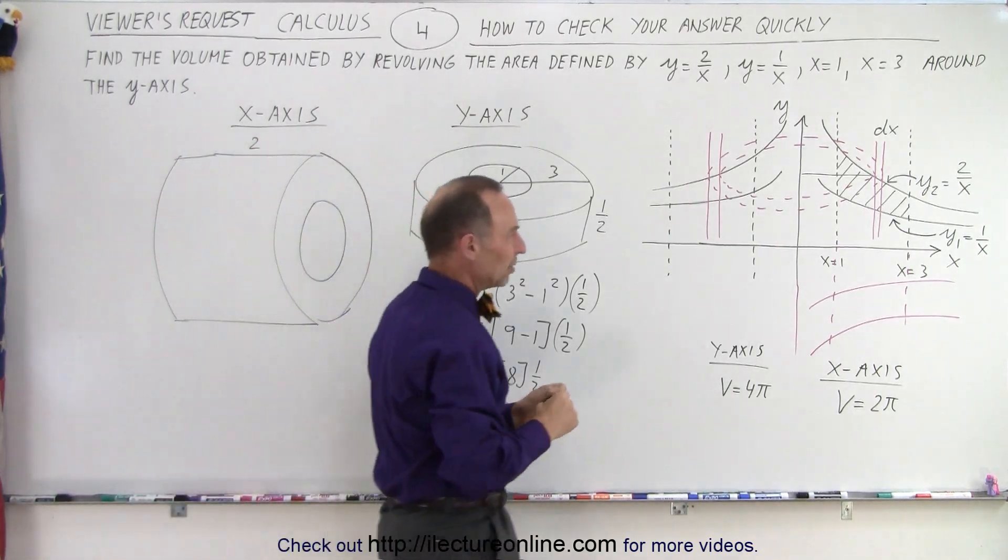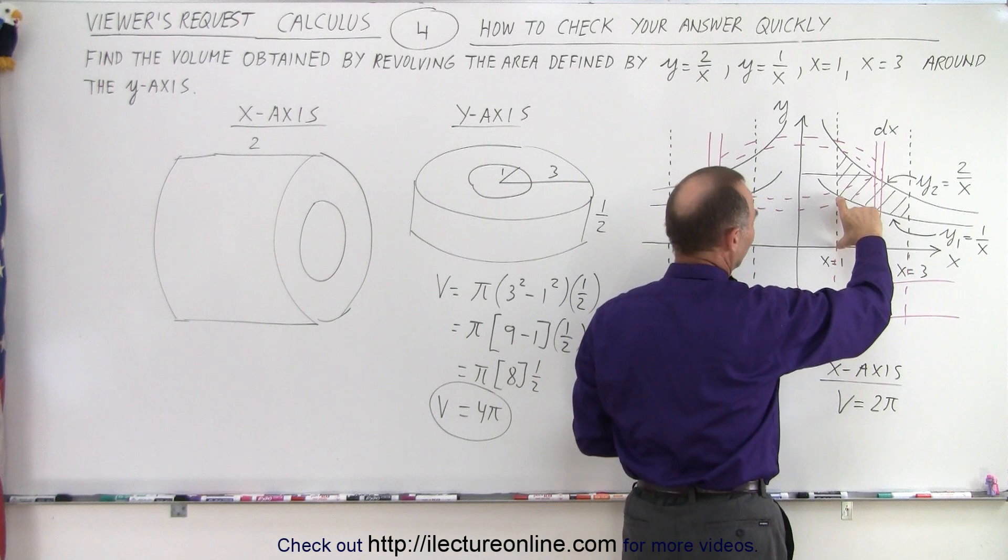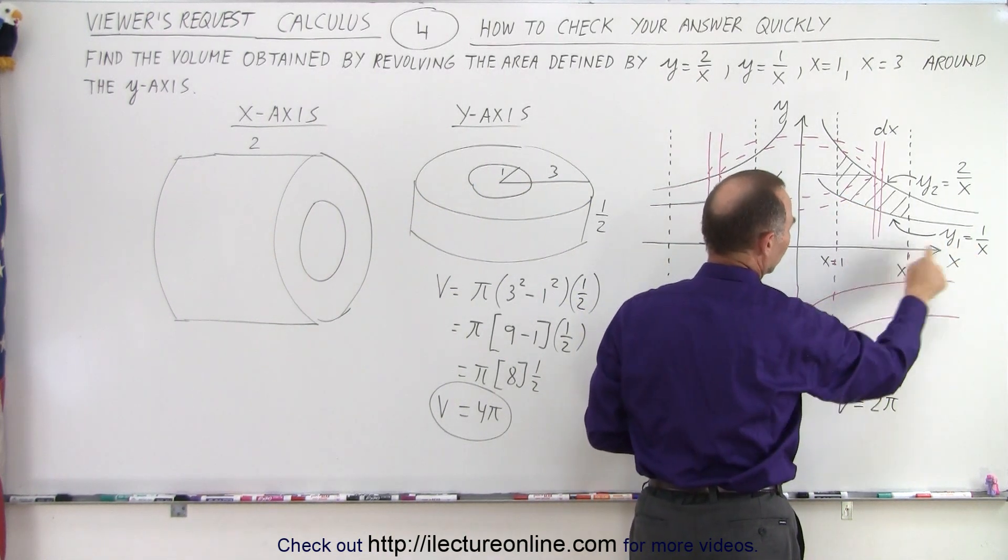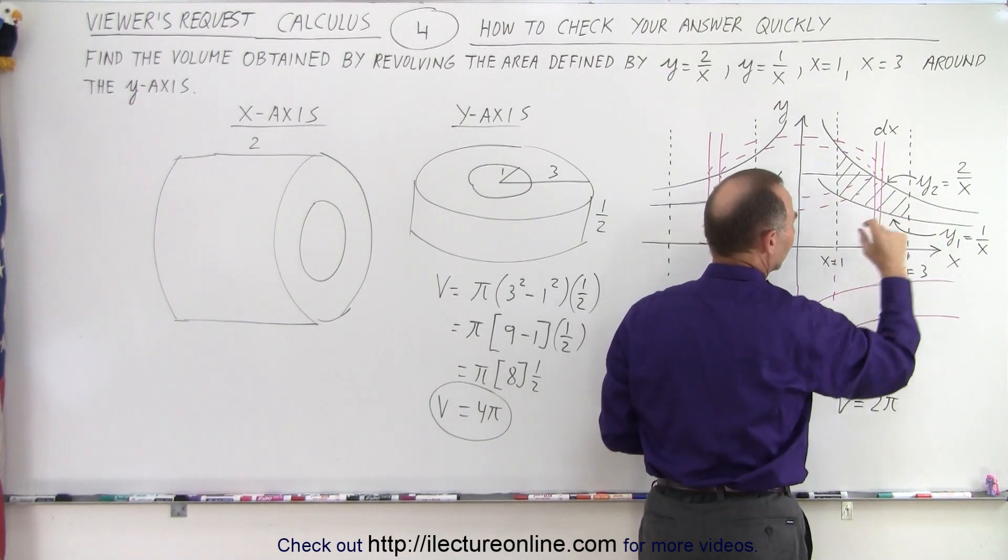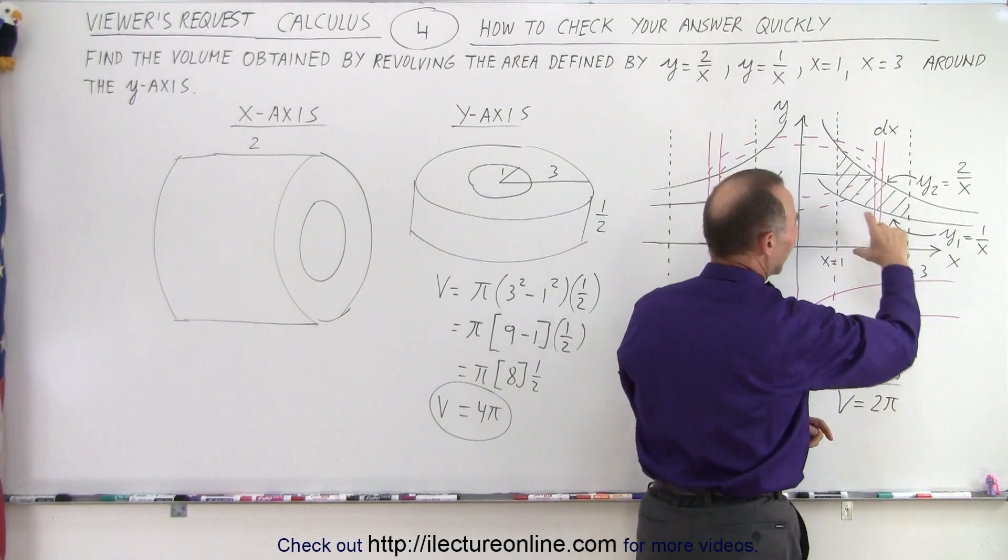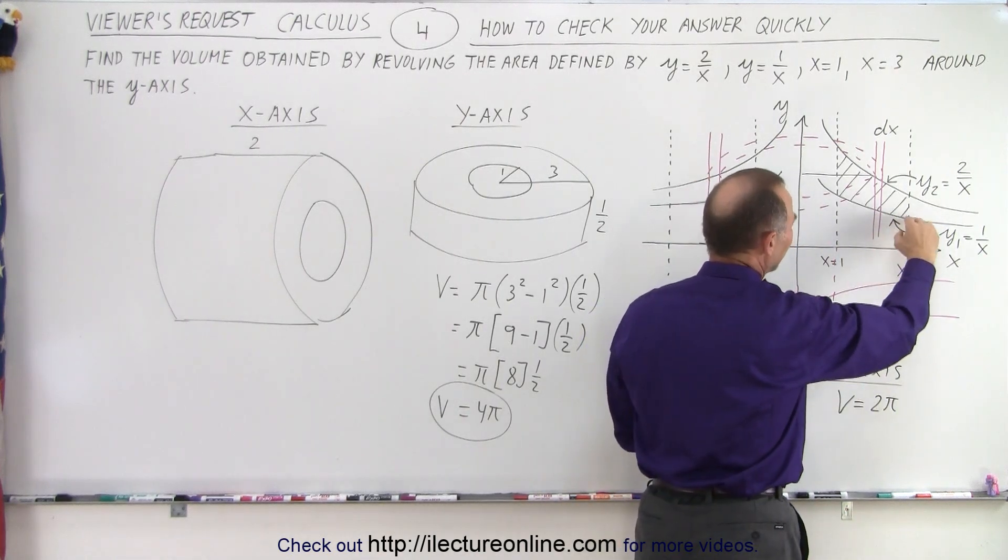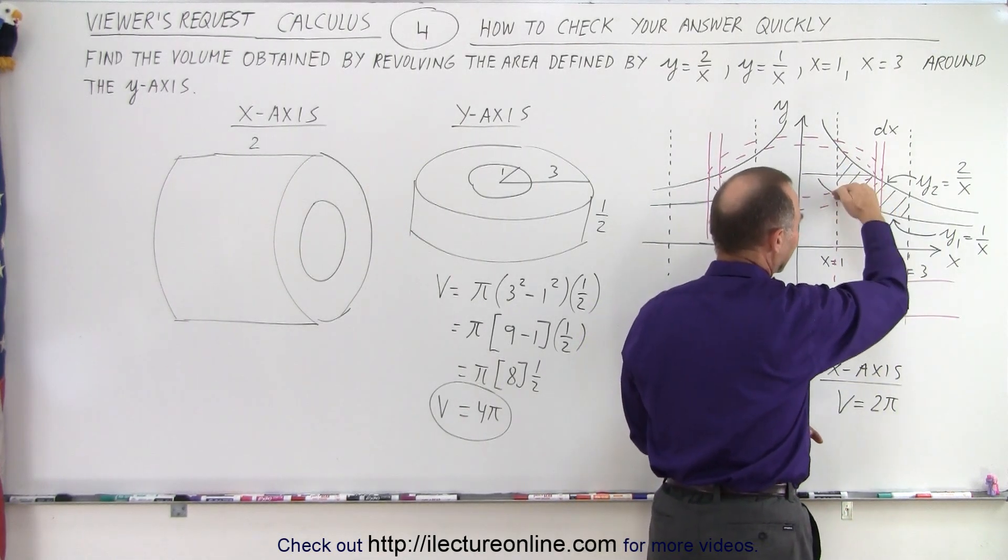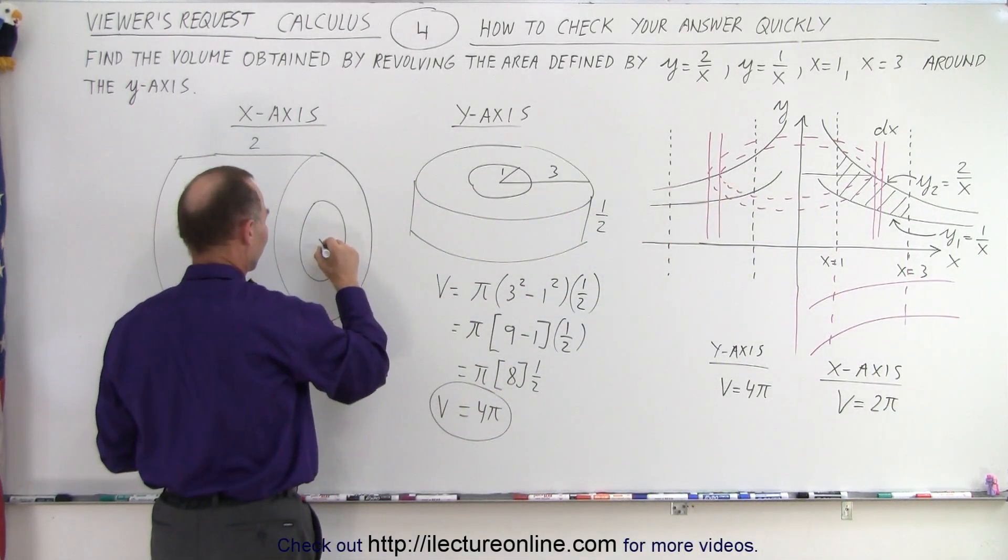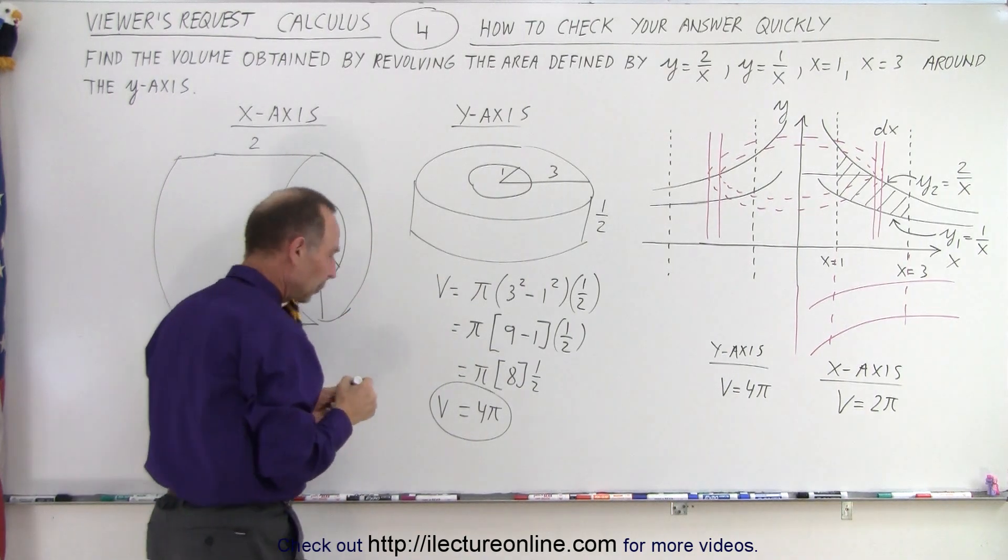The inner radius, notice that this is 1 because we have 1 over x. We plug in x equals 1, we get 1 for the height, and here we get 1/3 for the height. So the average height would be about 1/2 because it drops out more quickly here than it does there. So the inner radius would be about 1/2 for the inner radius.